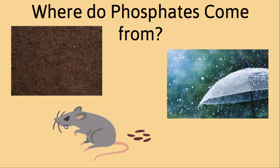So where do phosphates come from? They're probably already in your pool. Sources range from rain, dirt, and mud, animal droppings, and other decaying material. Phosphates are also used to treat your water, as well as found in some of the chemicals you put in your pool.